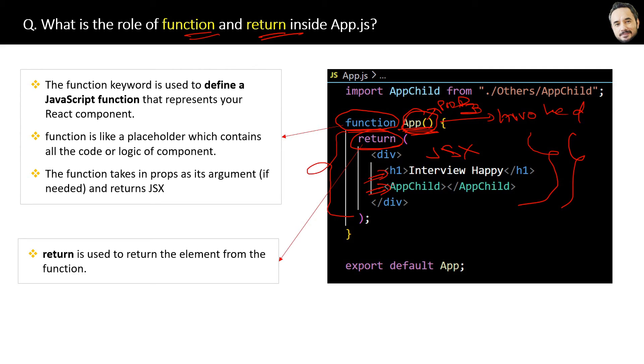Basically, whatever elements you see in the browser or UI are returned from this return block only. For example, from here we can return some div element, or we can return some child component also.